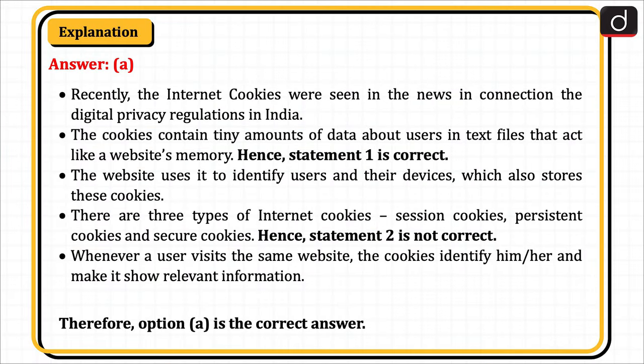Recently, internet cookies were seen in the news in connection to the digital privacy regulations in India. Cookies contain tiny amounts of data about users in text files that act like a website's memory. Hence, statement 1 is correct. The website uses them to identify users and their devices. There are three types of internet cookies: session cookies, persistent cookies and secure cookies. Hence, statement 2 is not correct. Whenever a user visits the same website, the cookies identify him or her and make it show relevant information. Therefore, option A is the correct answer.